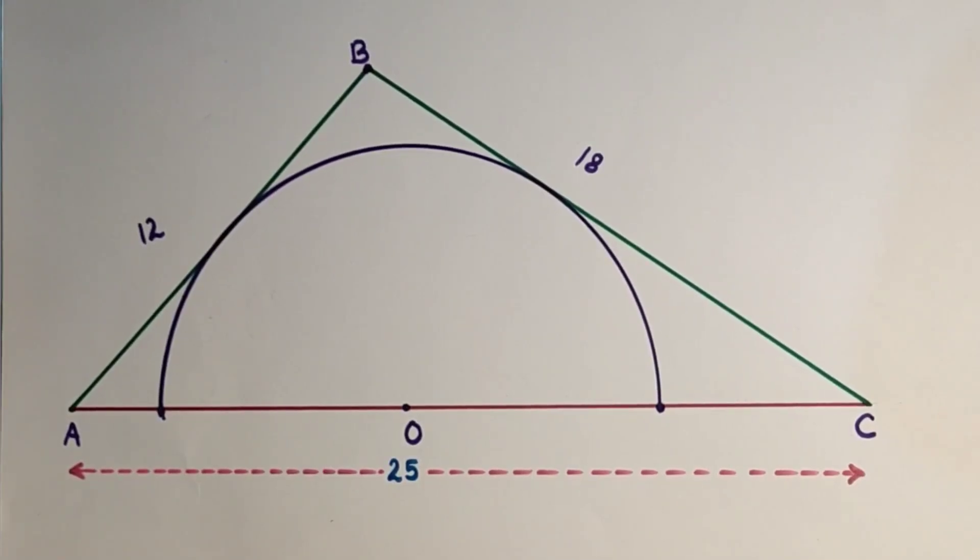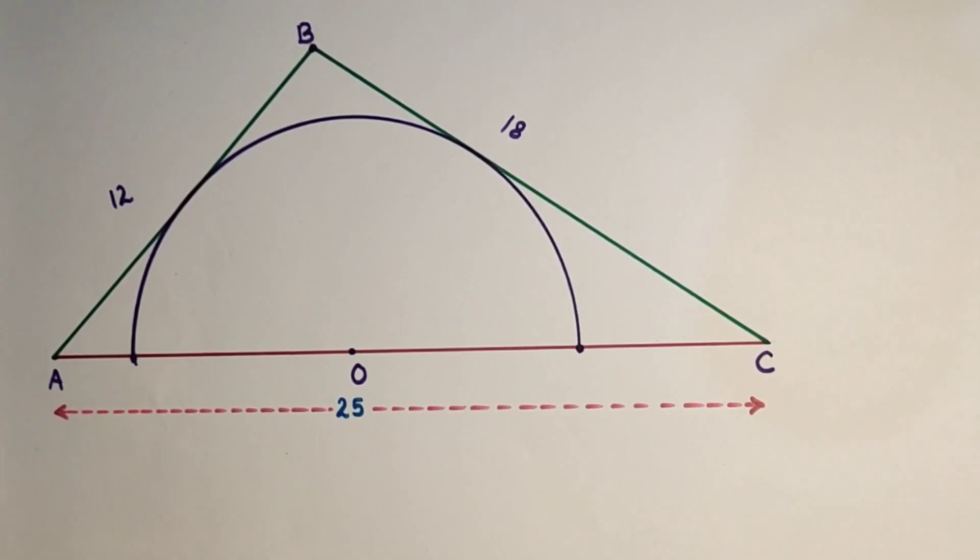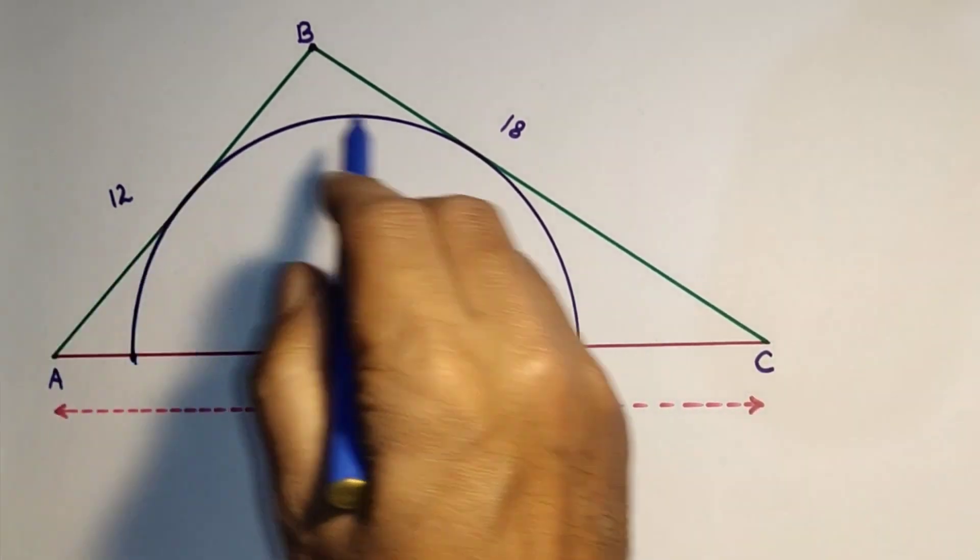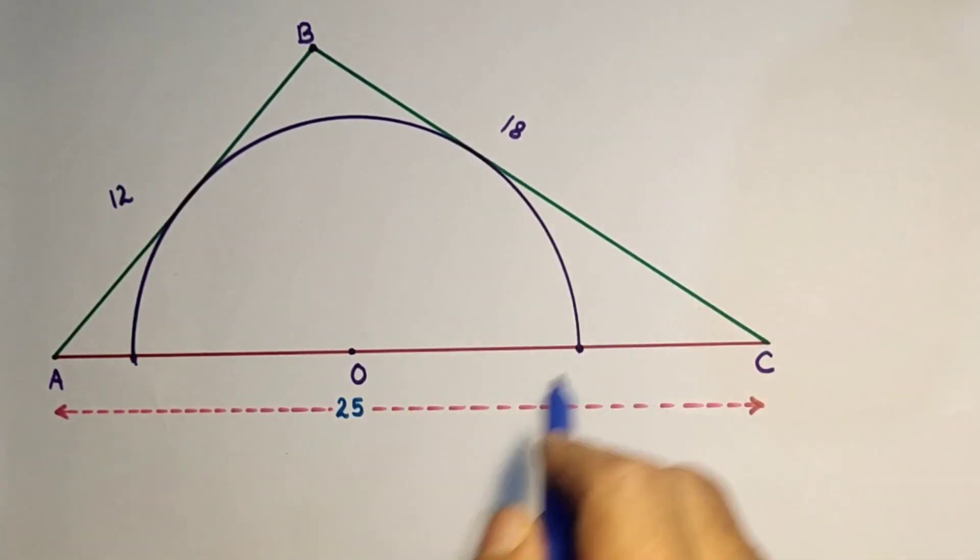Hi everyone, welcome to my YouTube channel. In this question we are given a triangle ABC, and this semicircle is drawn according to the given diagram.